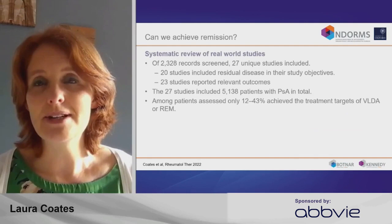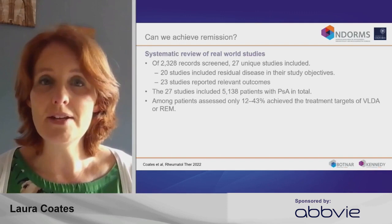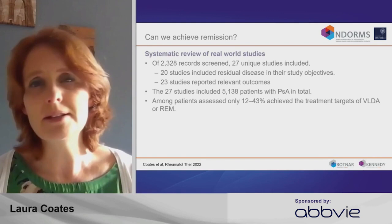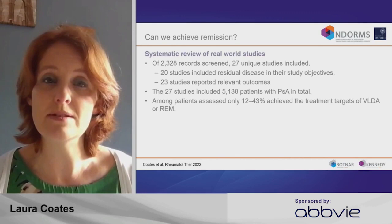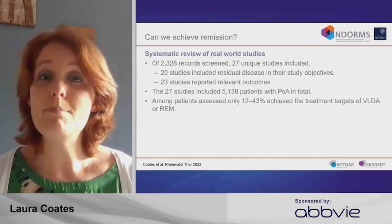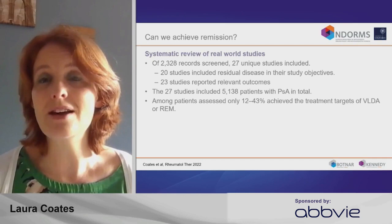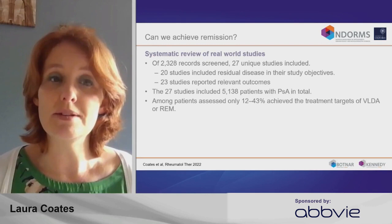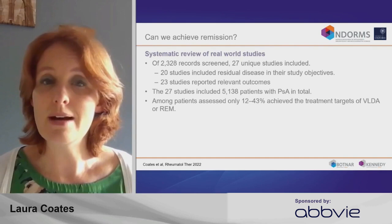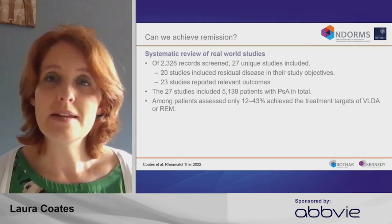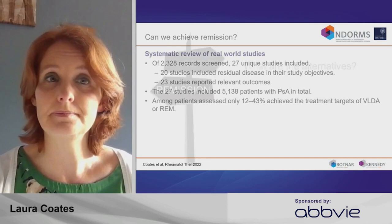One of the things we looked at in that meta-analysis was 27 different studies examining remission and residual disease activity in psoriatic arthritis. All studies are from real-world datasets — not clinical trials — and included over 5,000 patients. There's big variation across studies depending on which remission measure you use, what your patients look like, whether they have early or late disease, and whether you run a secondary or tertiary care service. But overall, the percentage of people achieving a target was between 12 and 43%. So it's below half in routine cross-sectional studies, and it's clear there's still more for us to do to get disease fully controlled.